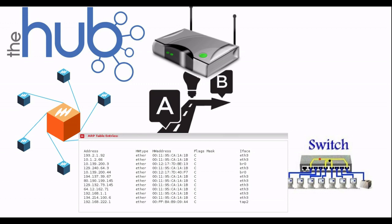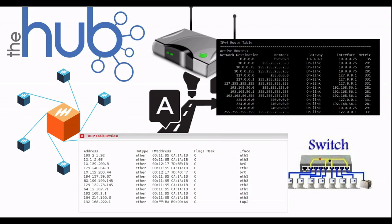If you look at the router, it can maintain a route table. If you look at the packet, it can forward the IP based on the route table.